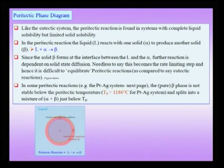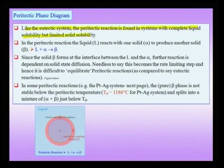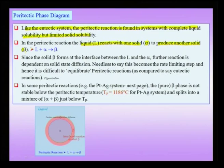Let us now move to the peritectic phase diagram. Like the eutectic system, the peritectic reaction is found in systems with complete liquid solubility but limited solid solubility, typically for elements whose melting points are very different. In the peritectic reaction, the liquid reacts with one solid alpha to produce another solid beta: liquid + alpha → beta. Since beta forms at the interface between liquid and alpha, further reaction depends on solid-state diffusion, making this the rate-limiting step.